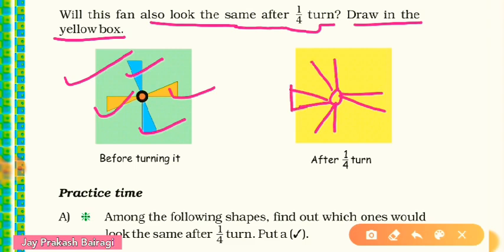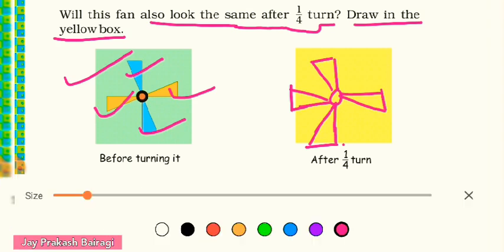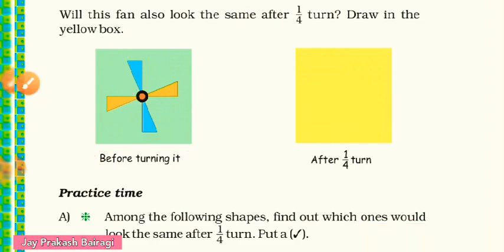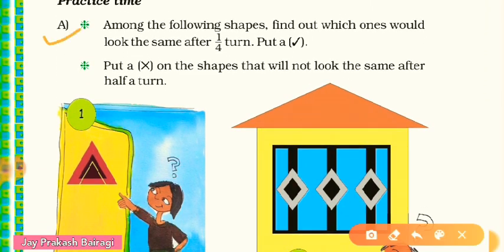I am making the blades of this fan. If we fill the colors, the left and right blades will be blue and the top and bottom will be yellow. You can see that after one fourth turn the picture does not look the same as the previous picture.